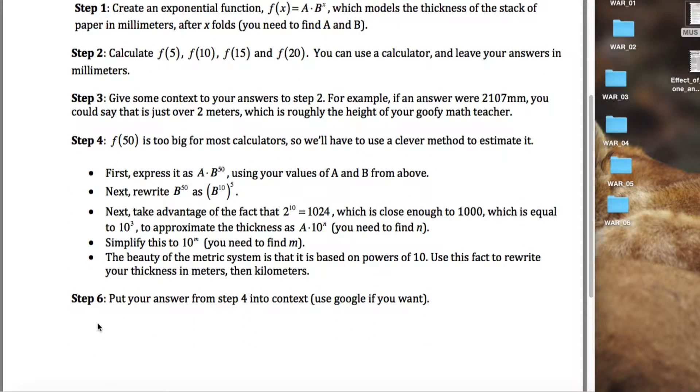Specifically, we would say that f of x equals, and then an exponential function is of the form a times b to the x, with a being the initial value. The initial value in this case is 0.1 millimeters, and b being the growth rate, so since this thing doubles every time we fold it, b would be equal to 2. So I got 0.1 times 2 to the x millimeters if you care about units, which I don't.